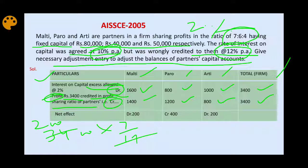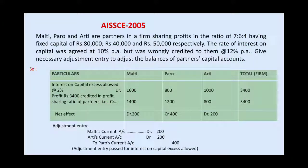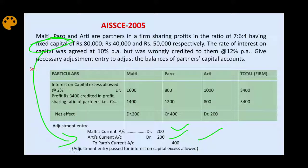The adjustment entry is: Malati's current account debit 200, Arati's current account debit 200, to Paro's current account credit 400. Current accounts are used here because the partners' capital accounts are fixed. This is the way of passing the adjustment entry. Thank you very much for watching this video — keep watching and share with your friends so they can also benefit.